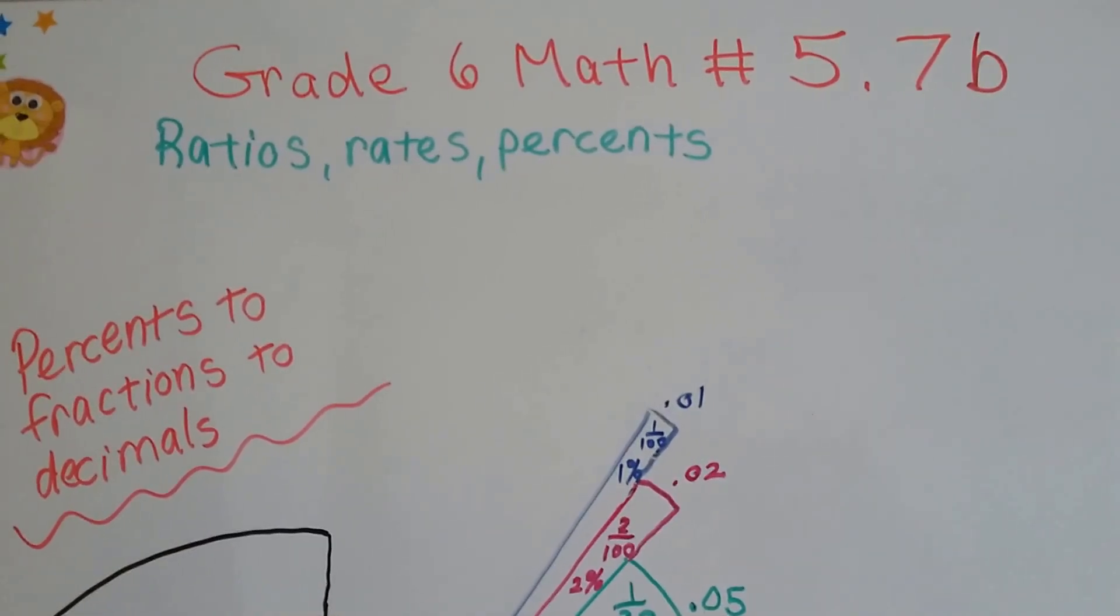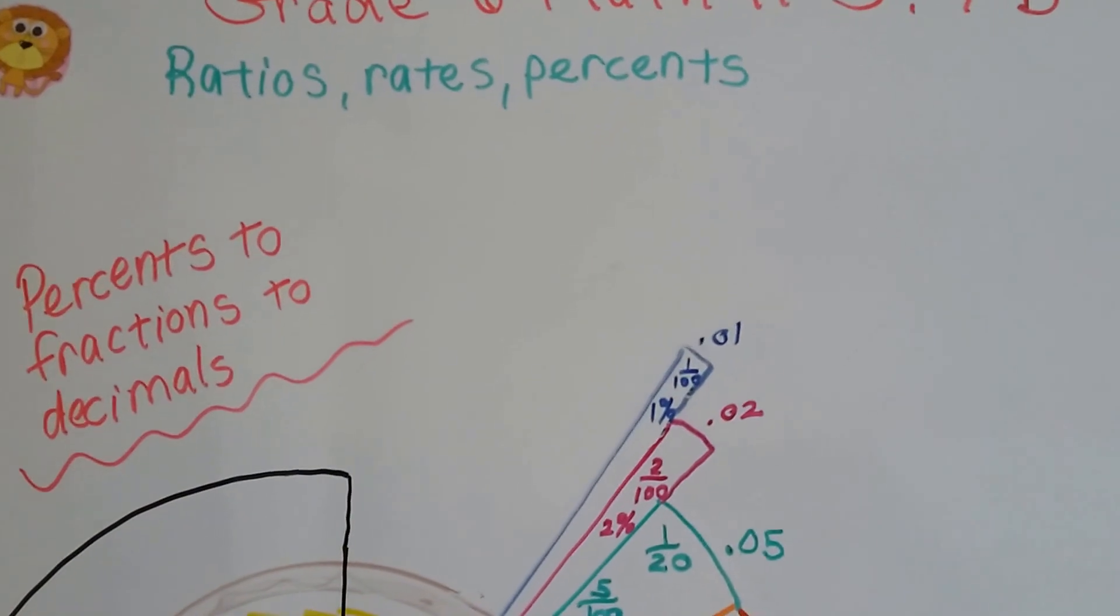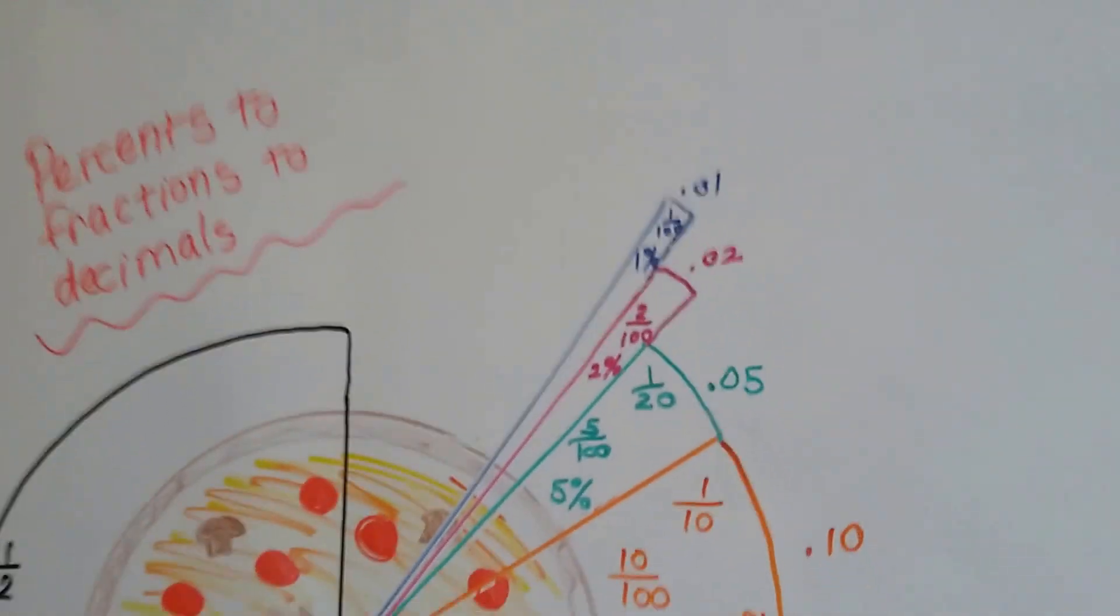Grade 6 math number 5.7b. Percents to fractions to decimals.